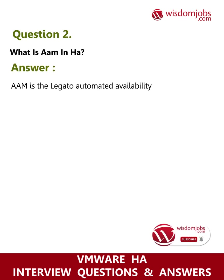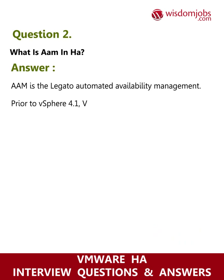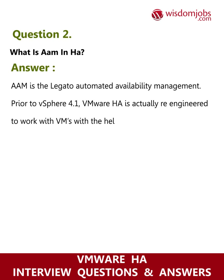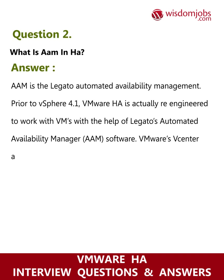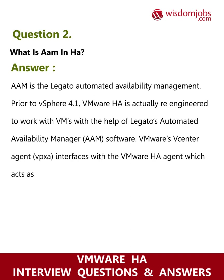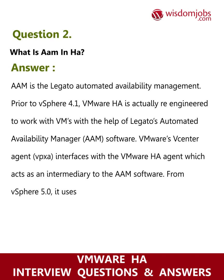Question 2: What is ARM in HA? Answer: ARM is the Legato Automated Availability Manager. Prior to vSphere 4.1, VMware HA was re-engineered to work with VMs with the help of Legato's Automated Availability Manager (ARM) software. VMware's vCenter agent (vpxa) interfaces with the VMware HA agent, which acts as an intermediary to the ARM software. From vSphere 5.0, it uses an agent called FDM (Fault Domain Manager).